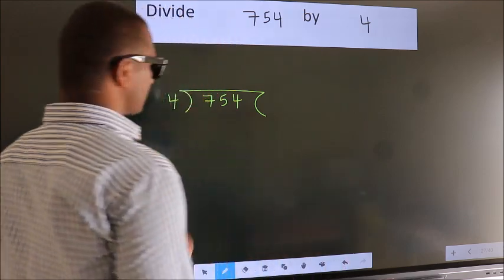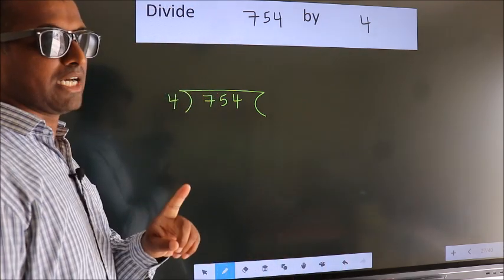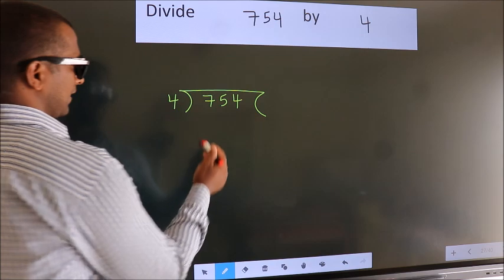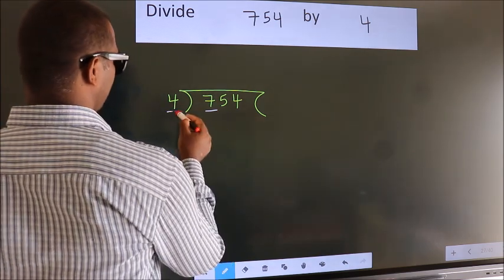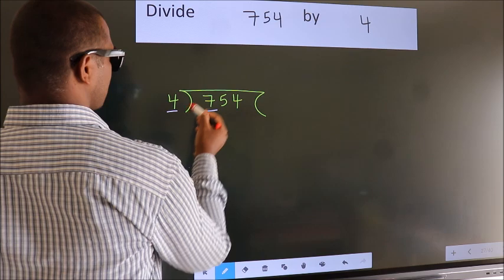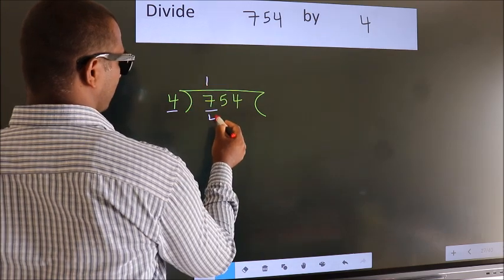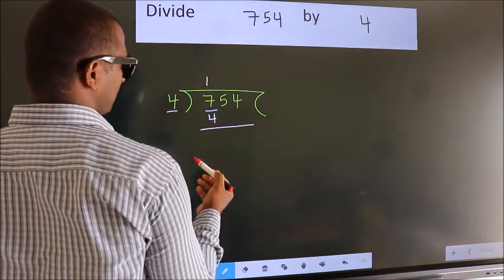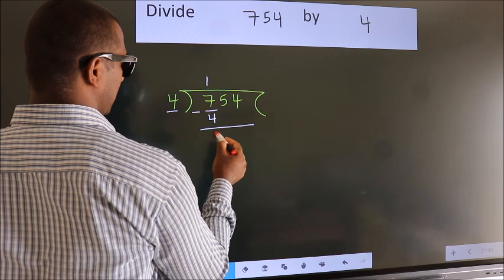This is your step 1. Next, here we have 7, here 4. A number close to 7 in the 4 table is 4 once 4. Now, we should subtract. We get 3.